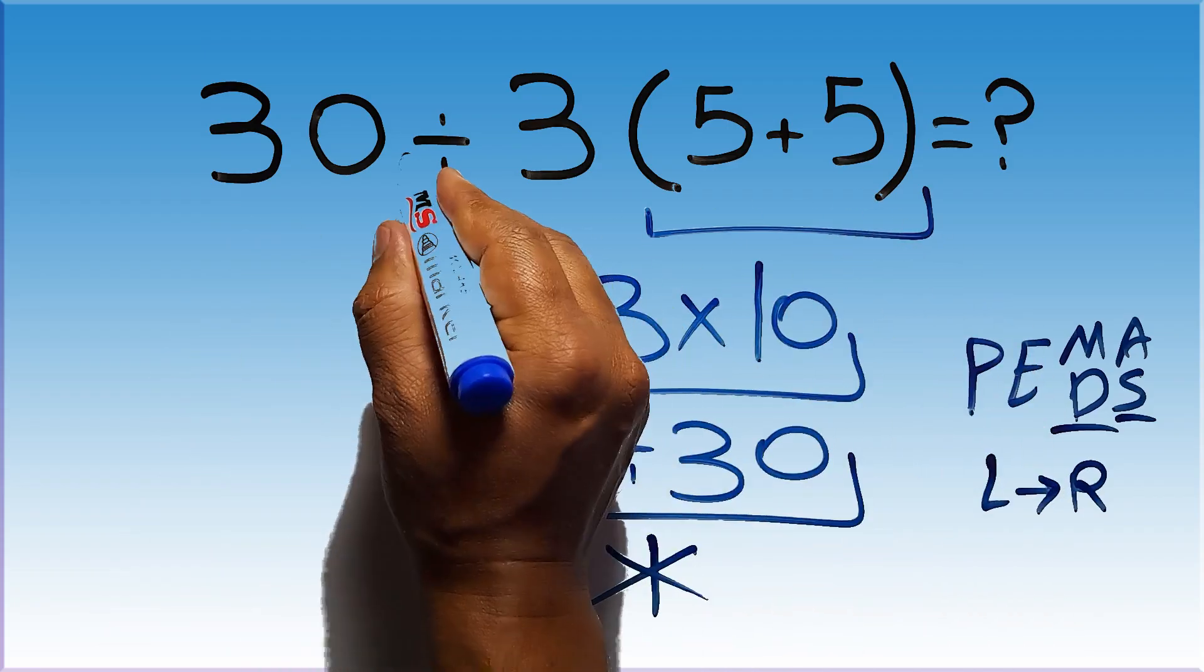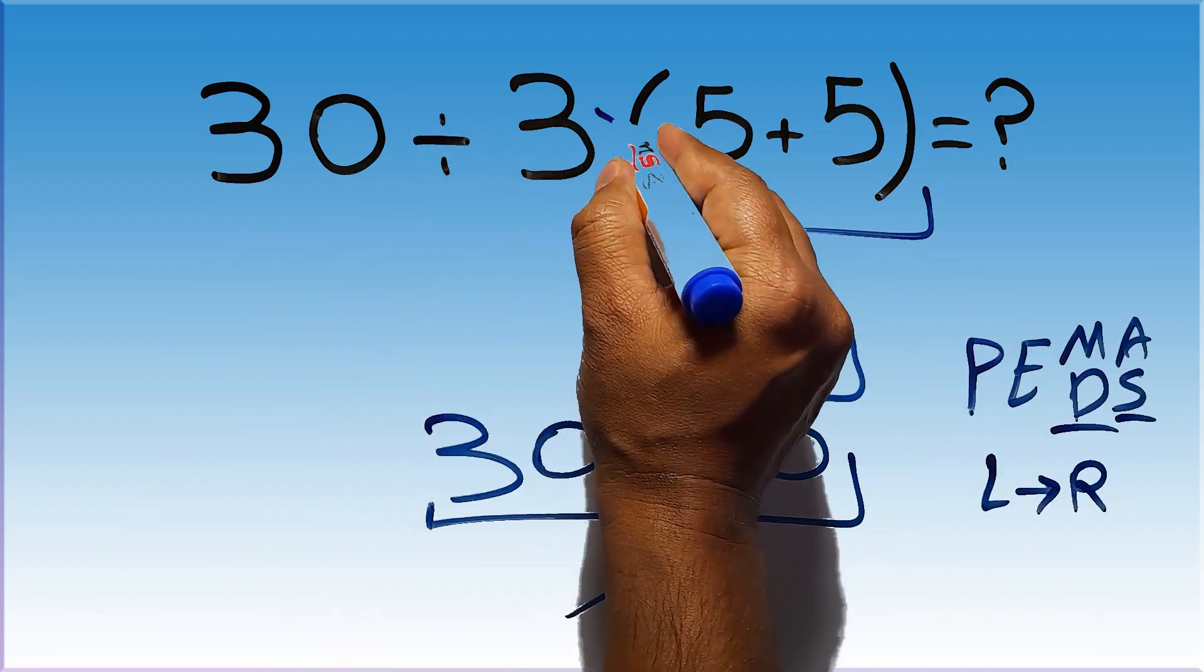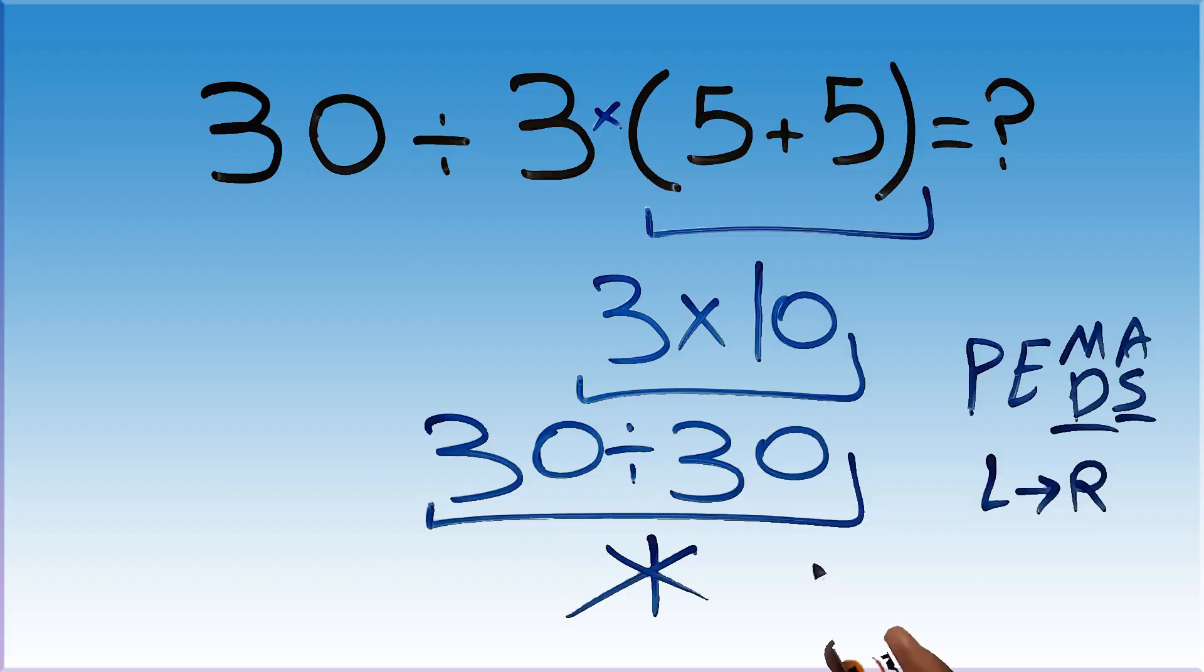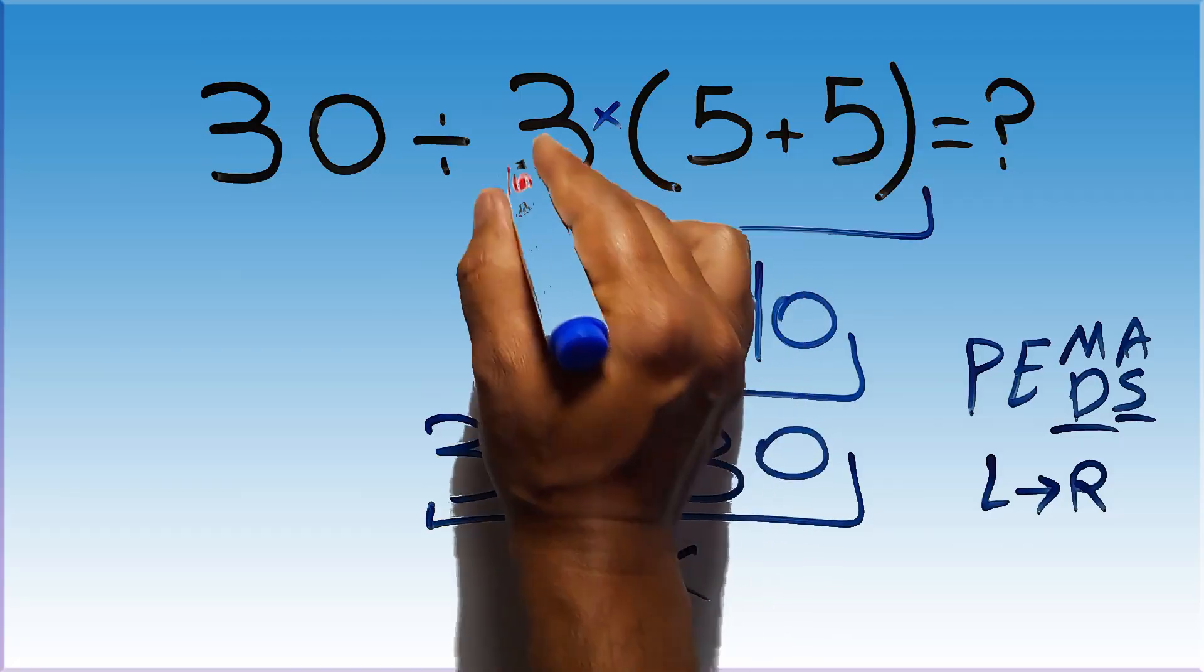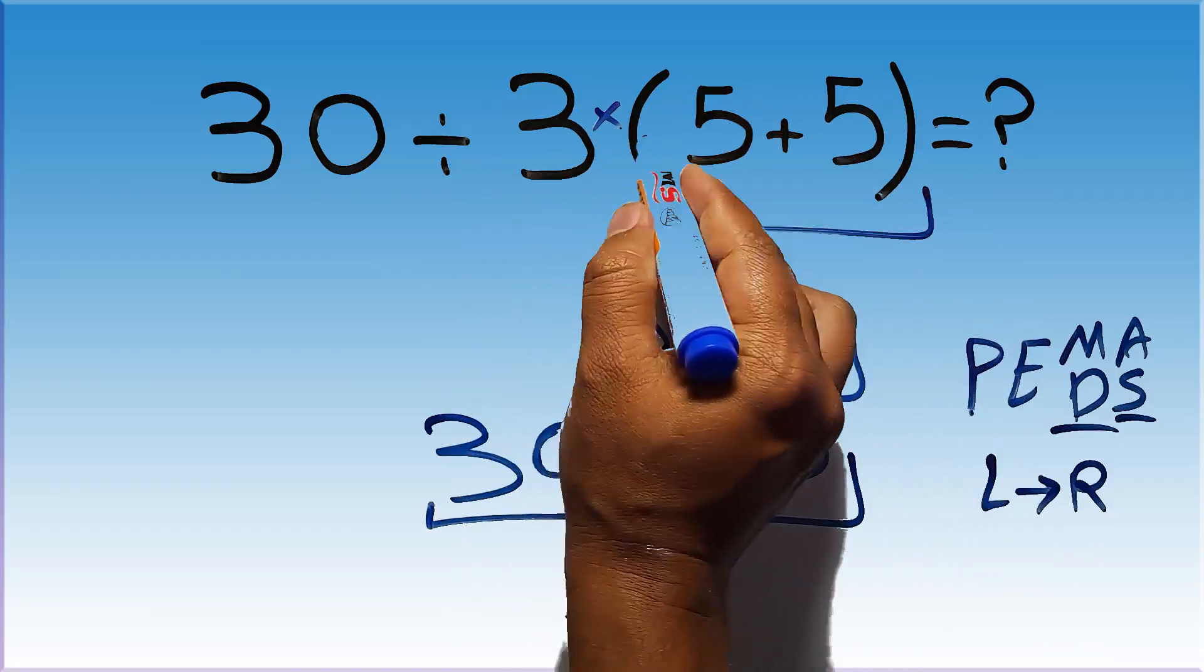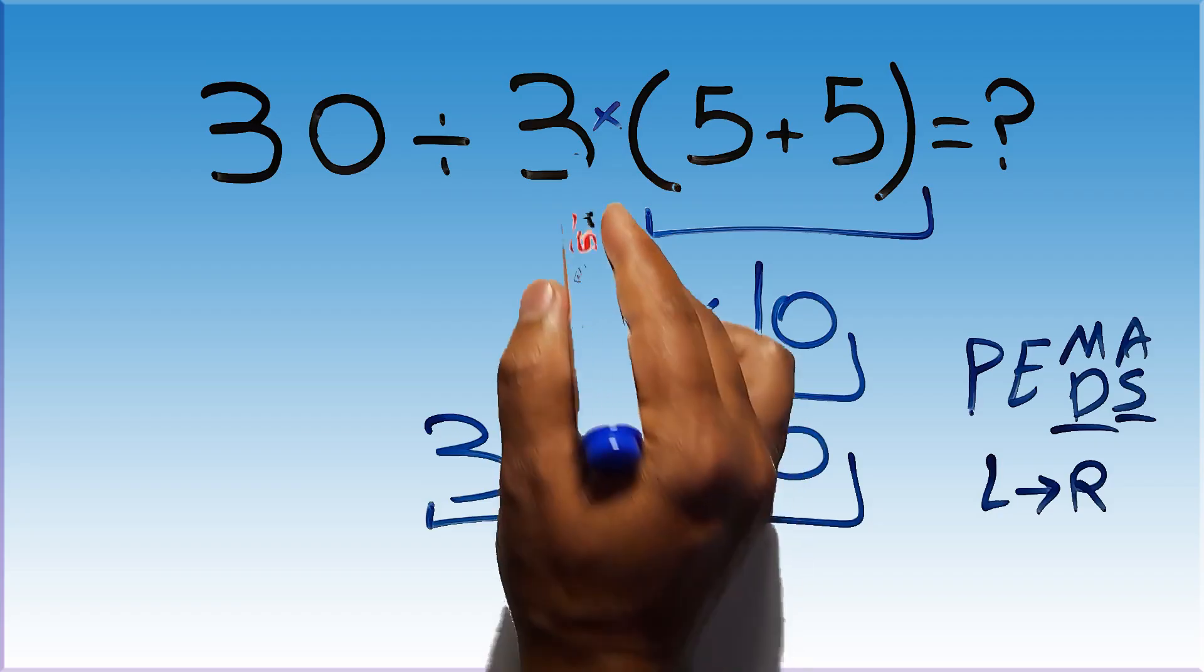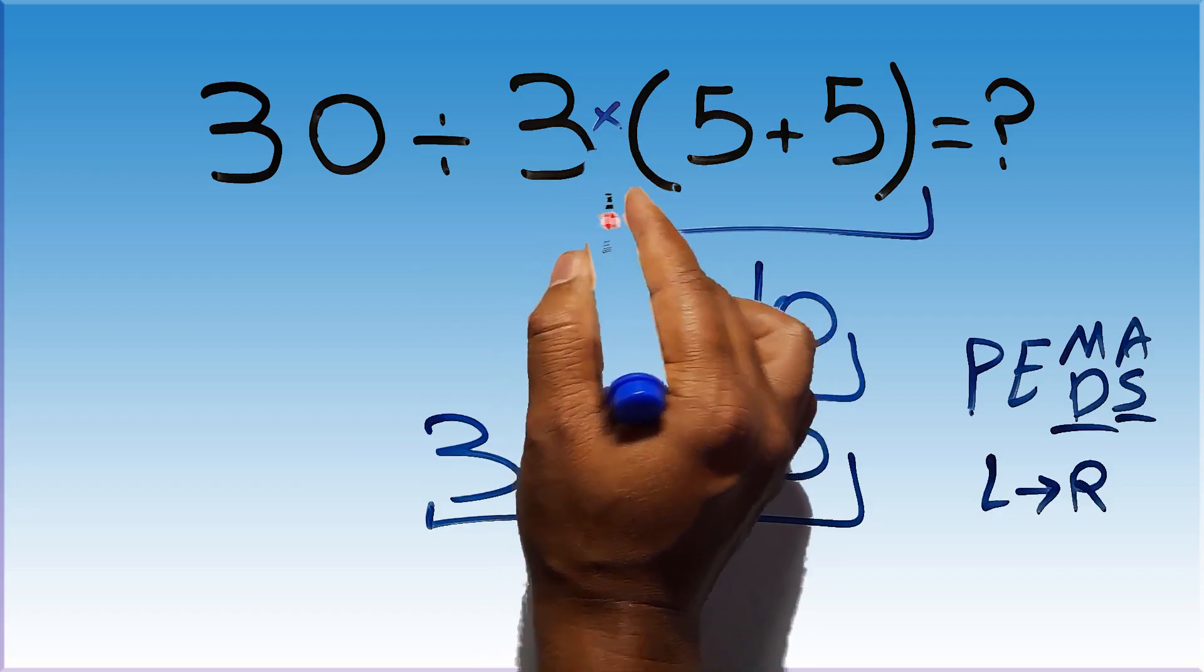In this expression, we have one division, one multiplication, and one parentheses. Inside this parentheses, we have one addition. Here we have a multiplication, because in mathematics, when a number is placed next to parentheses, it means multiplication, and we usually don't write the multiplication sign for brevity.